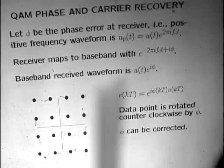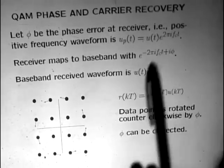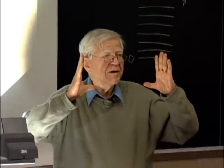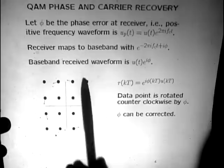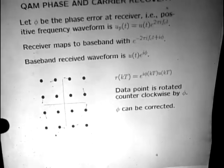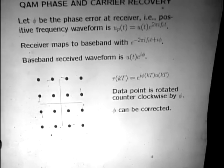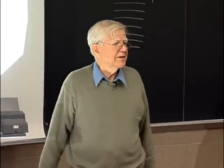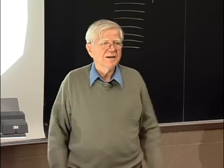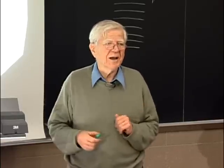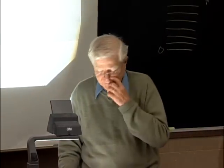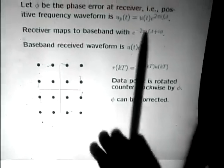After sampling at the right time, if there's a small phase error, this diagram is rotated around a little bit. Any time you send a particular point, what you receive is that point rotated by φ. The thing you do is measure the errors you're making when you make decisions on the received signals, then look at the phase of these errors. If all the phases are positive, you know to change the phase of the carrier one way; if negative, the other way.